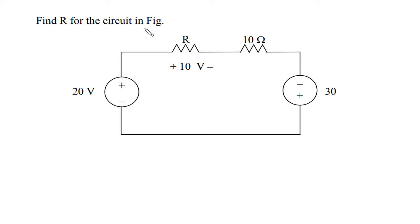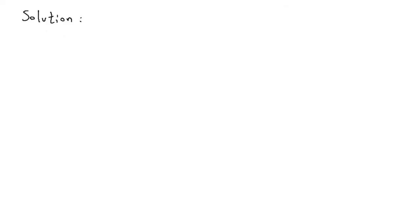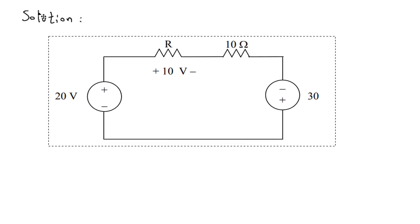Find R for the circuit in figure. We have to find this R. Solution. First we will redraw the circuit. Then assume the direction of current.